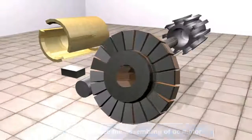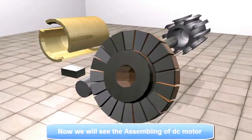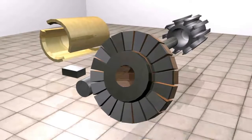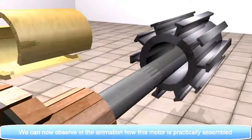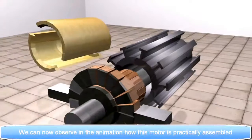Now we will see the assembling of DC motor. We can now observe in the animation how this motor is practically assembled.